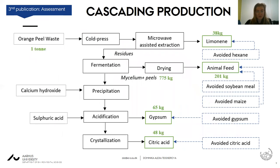For our plant, one ton of orange peels yields 38 kilos of limonene via cold press and microwave extraction. This limonene can be used as an organic solvent, avoiding hexane production. Cascading production makes sense here since essential oil is a very small part of the peels. The residues are fermented for citric acid production: in the first stages we produce mycelium and dried peels, arriving at 200 kilos of animal feed that partially avoids soybean meal and maize production. After precipitation and acidification steps, we obtain 65 kilos of gypsum usable in the cement industry, and after crystallization, 48 kilos of citric acid — all based on 100 tons of peels per week translated to the functional unit of one ton.